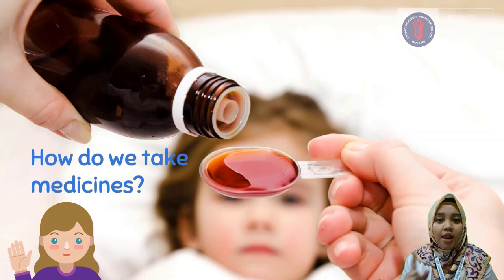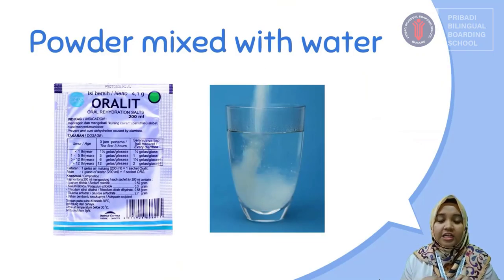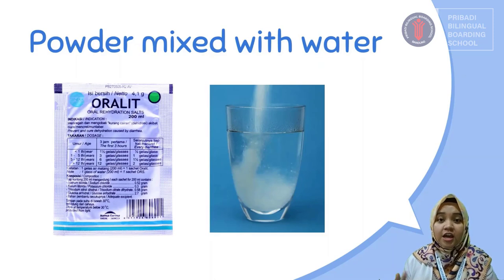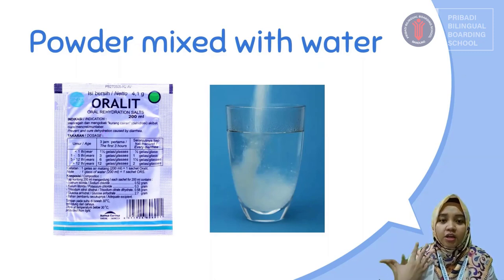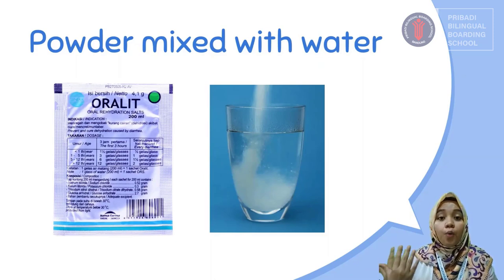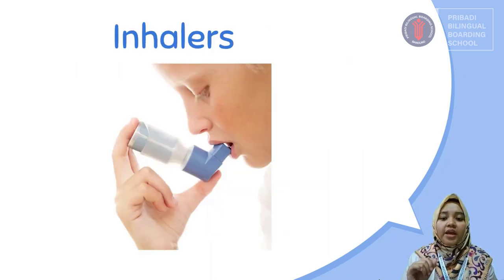The first way is the type of medicine that needs to be mixed with water. Usually this kind of medicine comes in powder form. For example, we have oral rehydration salts — it is used when you get dehydration. When you need more hydration, the doctor will usually prescribe you rehydration water.